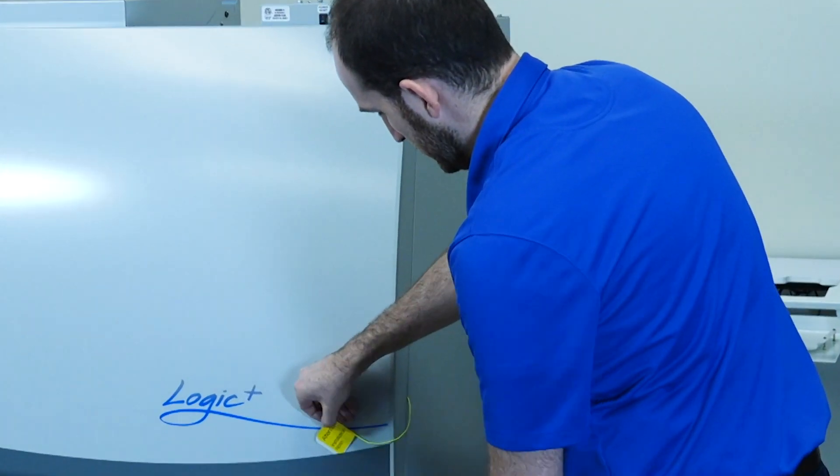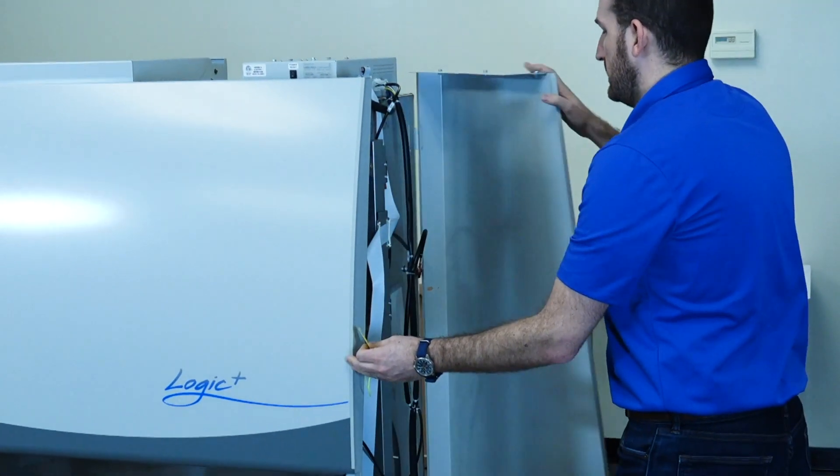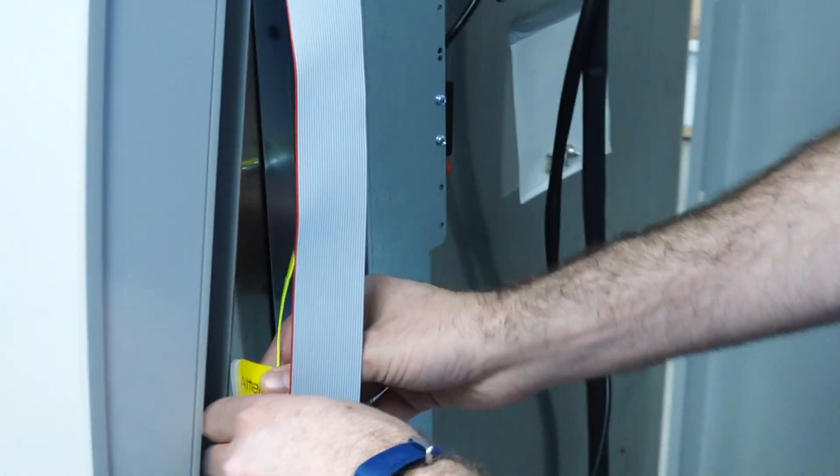Next, remove both sash pins. Locate each pin by following the yellow string from the front of the BSC back to the side panels. Firmly pull both pins to remove.